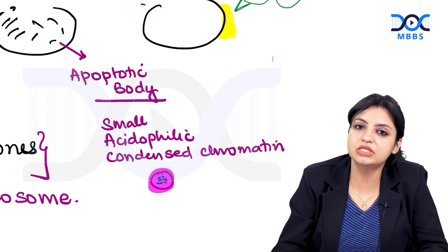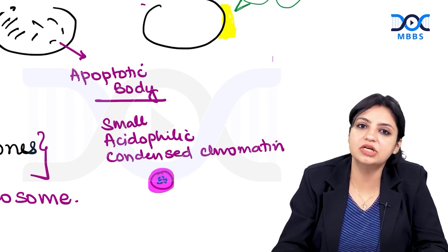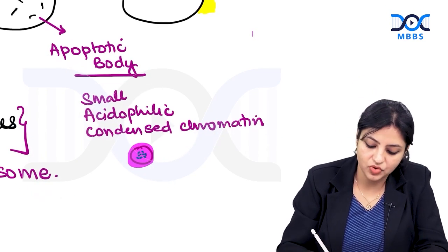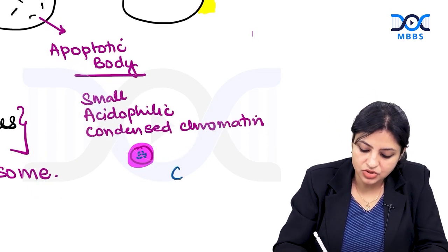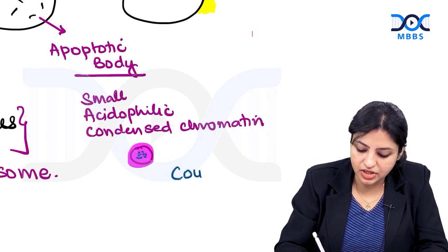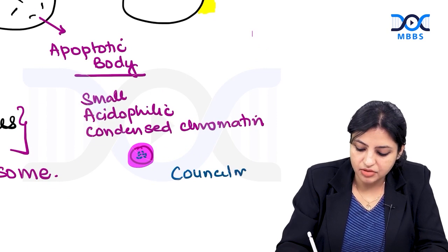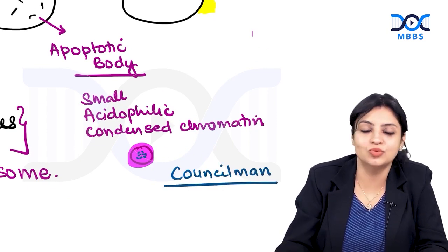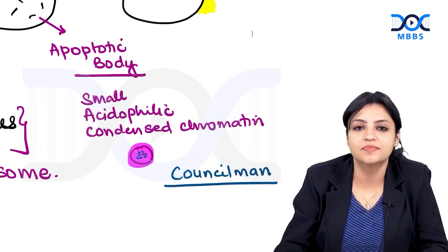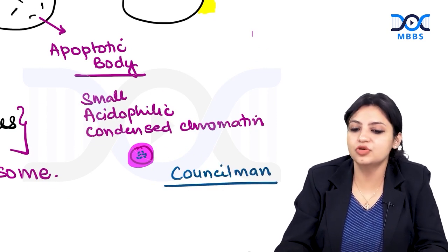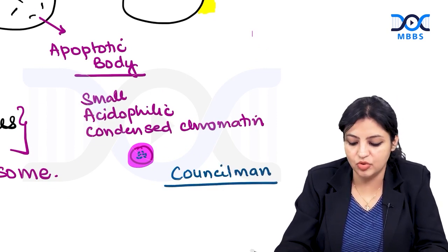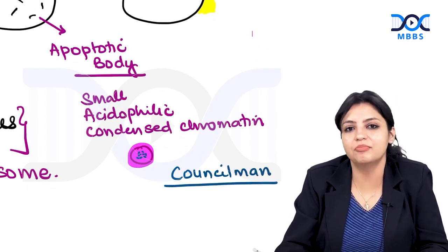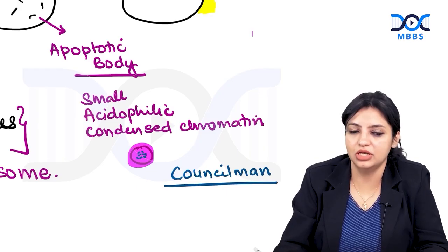In different organs of the body, these apoptotic bodies have been given different names. In the liver, it was first identified by Councilman and is therefore called councilman bodies. If somebody asks you what councilman bodies are — they are nothing but apoptotic bodies.